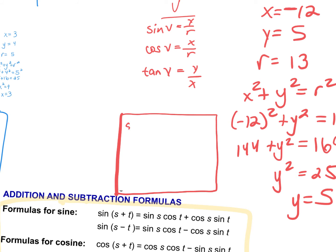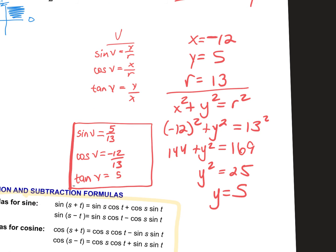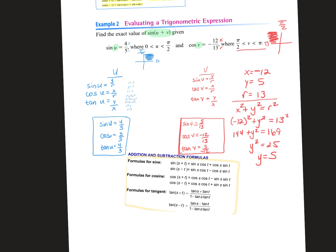I'm going to write down the sine of V, cosine of V, and tangent of V. Sine is Y over R, so it's 5 over 13. Cosine is negative 12 over 13. And tangent is 5 over negative 12. Questions so far?